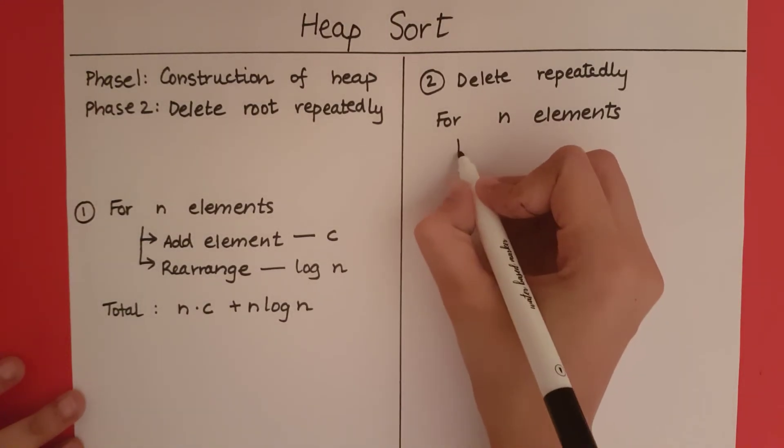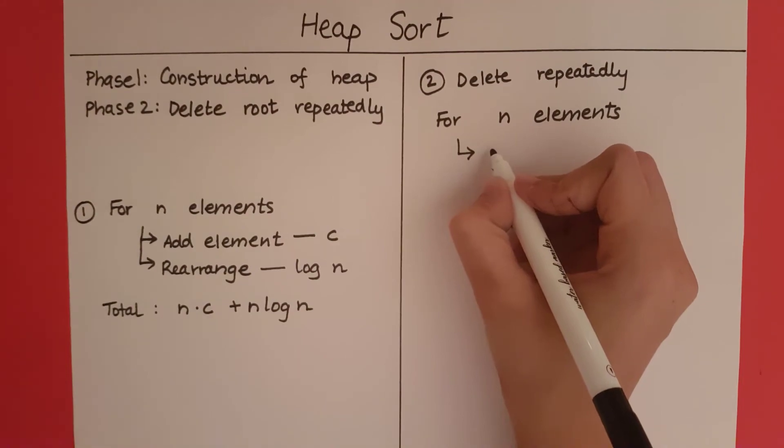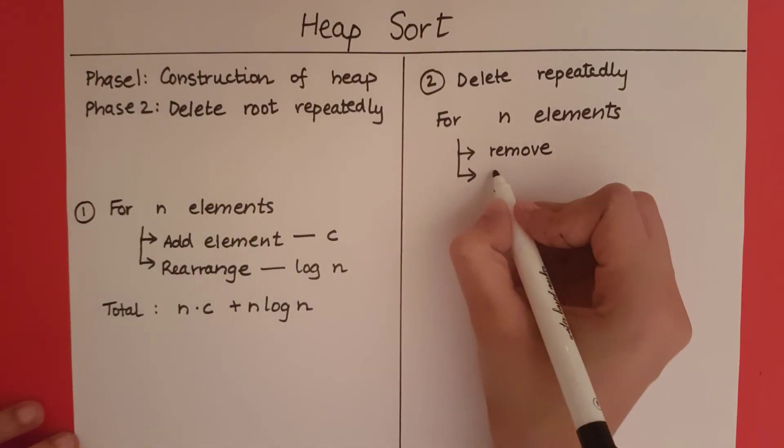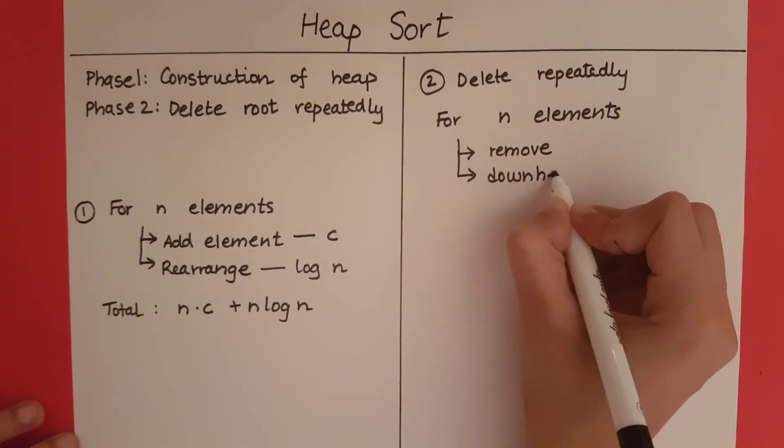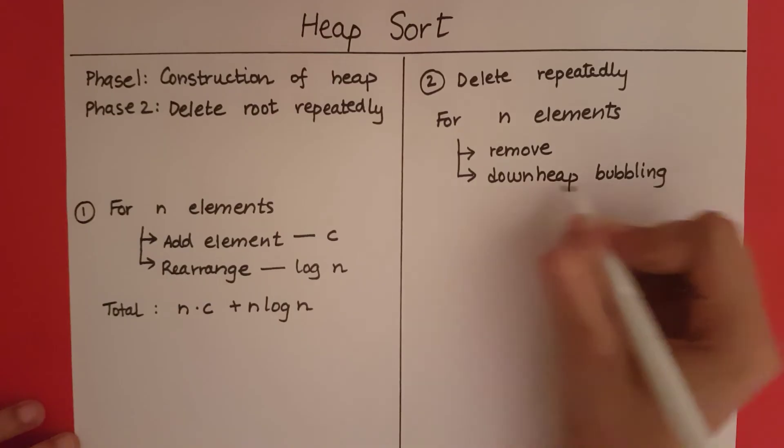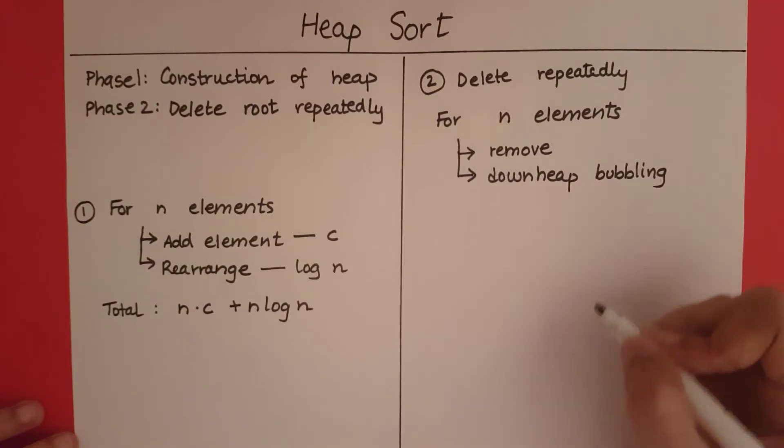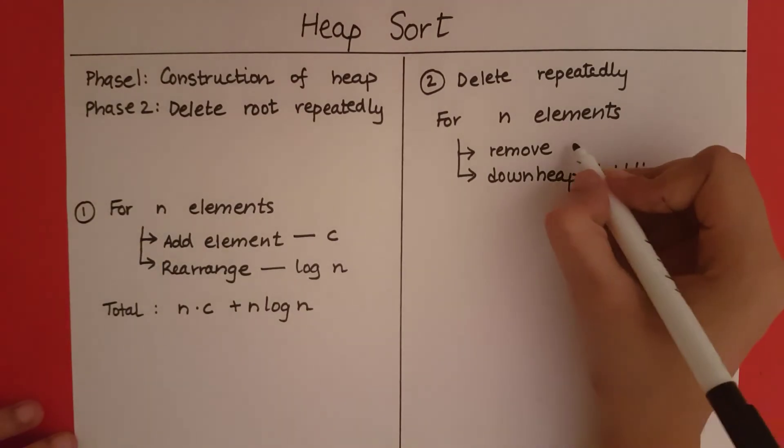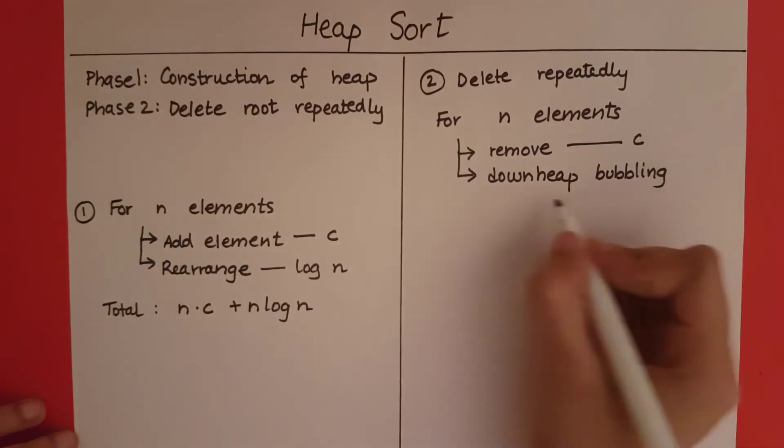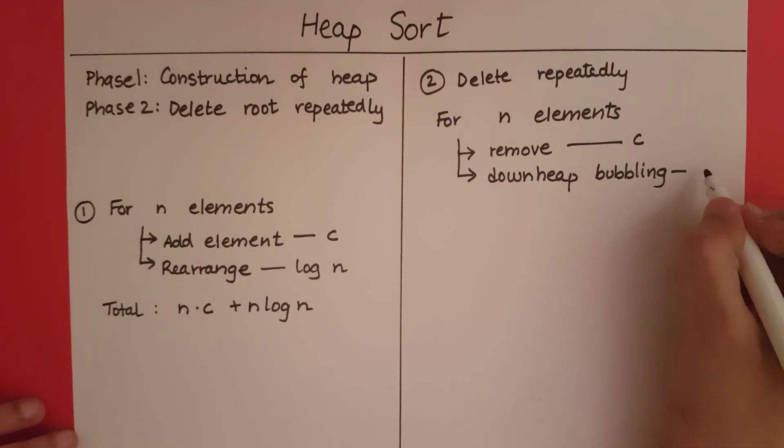So for n elements, what am I going to do? I am going to remove it from the tree and then I am going to perform downheap bubbling. Downheap bubbling of what? Of the replaced element which replaces the root we have just removed. To remove the element it's going to take some constant time, again some c. And for downheap bubbling, it is going to take me a time of log n in the worst case.